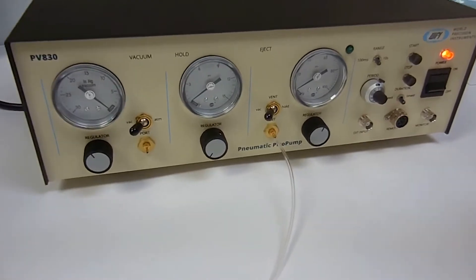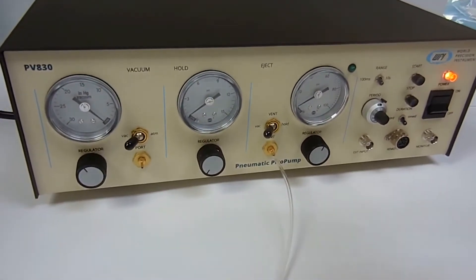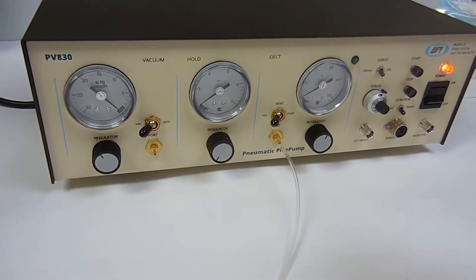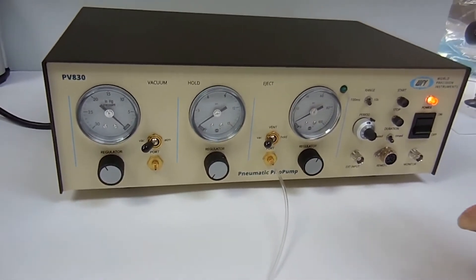This is the PV-830 pipette after it's been calibrated. This demonstration is going to show what the hold pressure looks like and how to set the hold pressure.